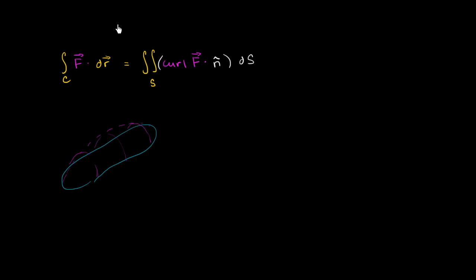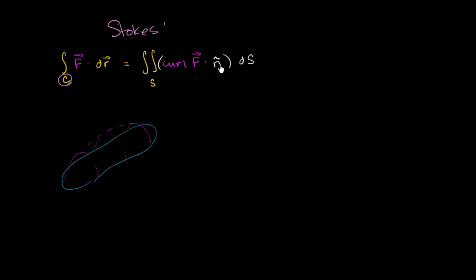I've rewritten Stokes' theorem right over here. What I want to focus on in this video is the question of orientation. Because there are two different orientations for our boundary curve — we could go in that direction, or we could go in the opposite direction. And there are also two different orientations for this normal vector: it might pop out like that, or it could go into the surface like that. So we have to make sure that our orientations are consistent.